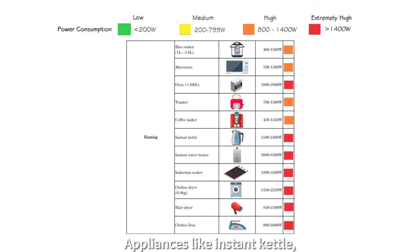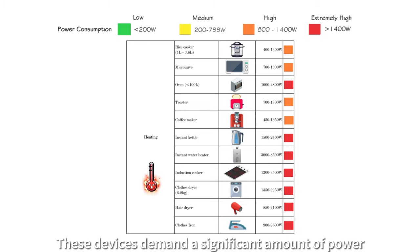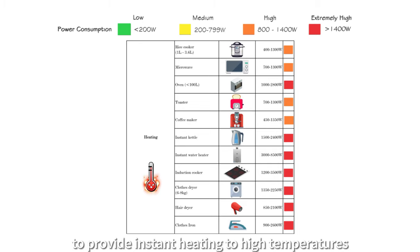Appliances like instant kettle, instant water heater, induction cooker, clothes dryer, hair dryer, and clothes iron fall into the category of extremely high power consumption. These devices demand a significant amount of power to provide instant heating to high temperatures. Hence, it is crucial for us to be mindful of their usage time.